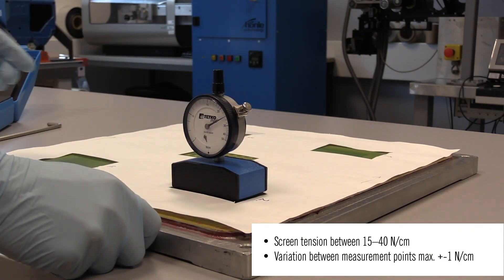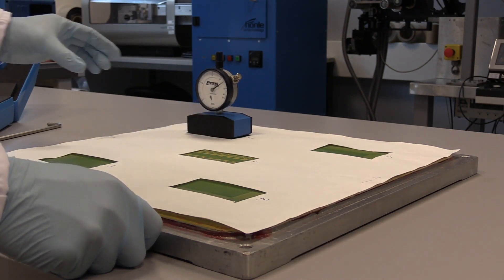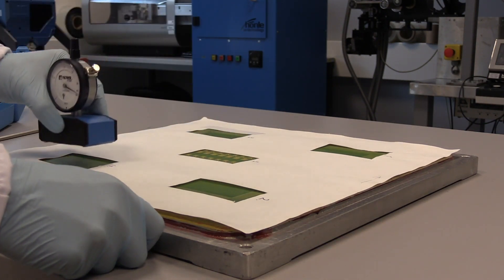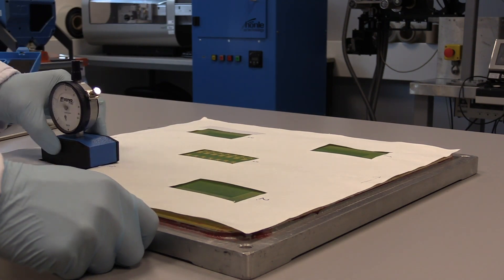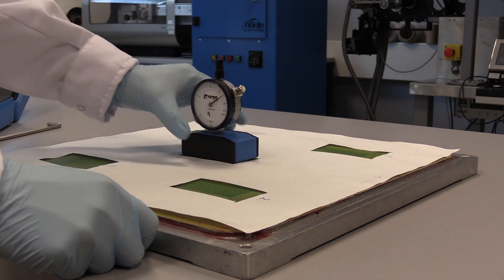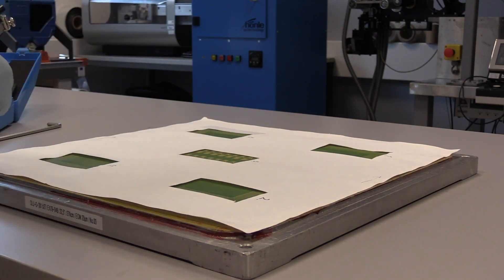Tensiometrillä mitataan tarkasti seolon kireyttä. Jos kireys on muuttunut, se todennäköisesti vaikuttaa kuvan suhteen muuttumiseen ja kuva ei tulostu oikeassa mittasuhteessa sitten tuonne alustalle. Tämä seolo näyttää olevan kunnossa.